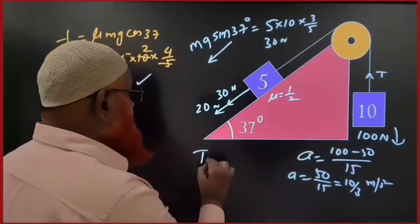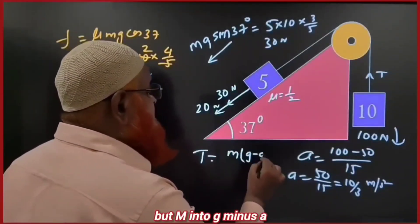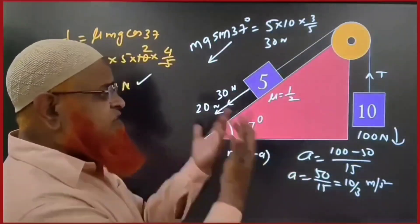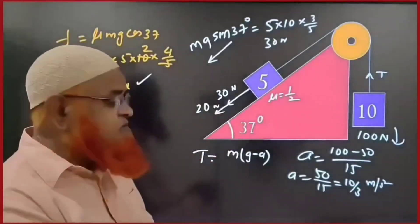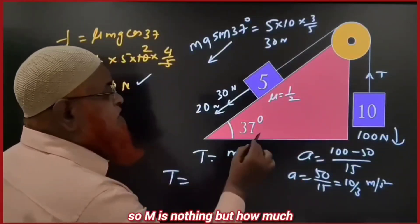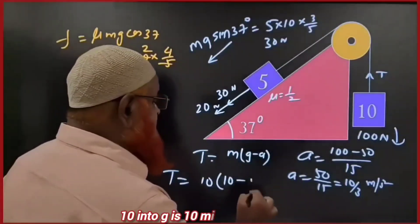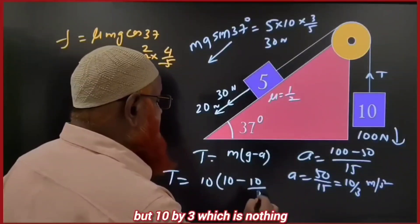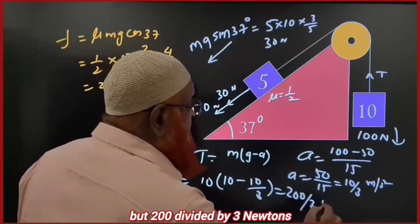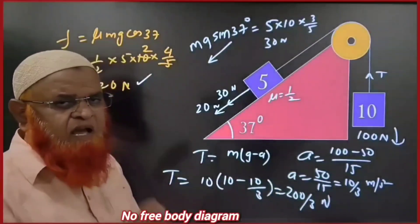Now what is the tension in this case? Tension is M into G minus A, because the block is coming downwards. M is 10, g is 10, and A is 10/3. So tension equals 10 into (10 minus 10/3), which is 200/3 newtons. No free body diagram is required — just a simple method.